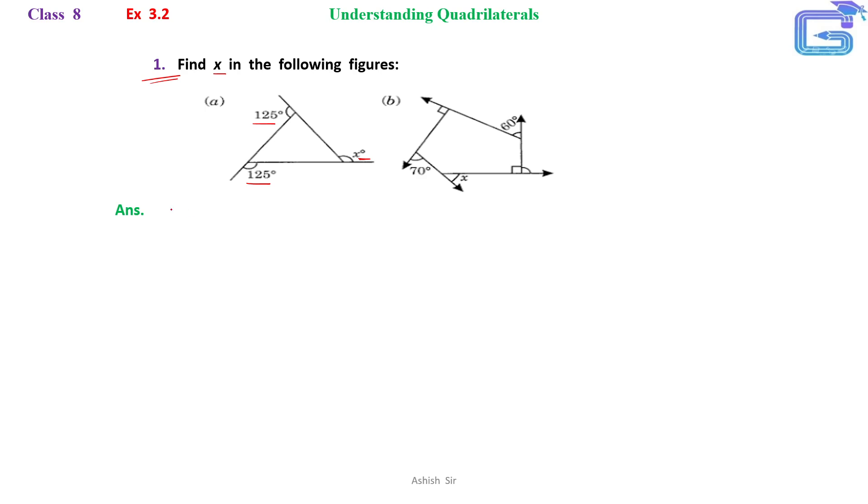By the property of exterior angles, we know that sum of all exterior angles of a polygon is equal to 360 degrees. By this property, we can find the value of unknown angle.